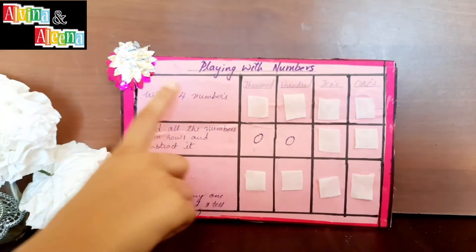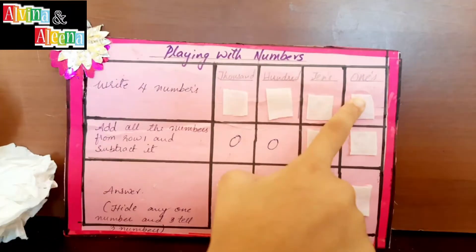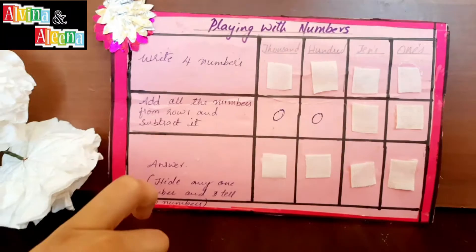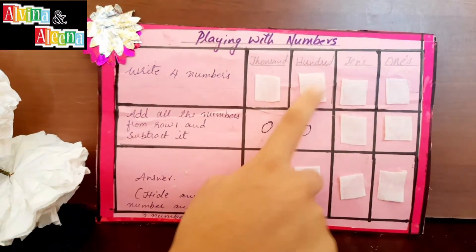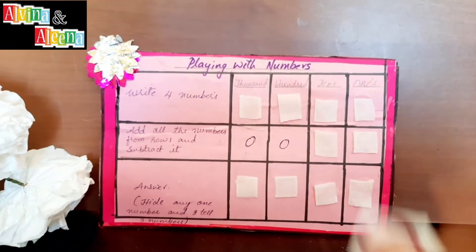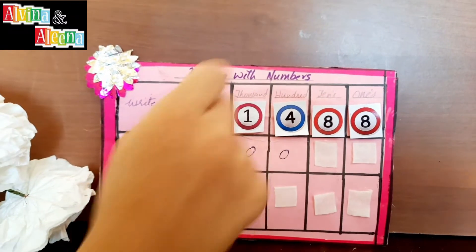Write four numbers, for example 1, 4, 8, 8. Now add all of these numbers.